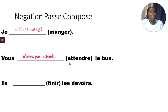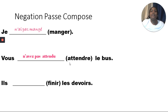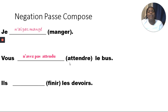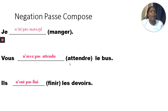Our next one: 'vous _____ attendu le bus.' I want to say that you have not waited for the bus: 'vous n'avez pas attendu le bus.' The 'ne' and 'pas' is only around the conjugated verb avoir — the first verb, which was conjugated. And then: 'il _____ fini les devoirs' — we want to say he has not finished his homework: 'il n'a pas fini.' He had not finished his homework.